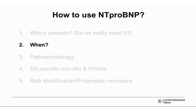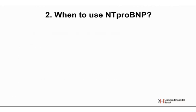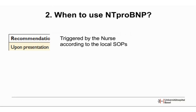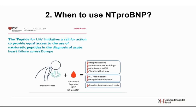Regarding the optimal time point to measure NT-proBNP: the guidelines are clear — if we suspect heart failure, we should measure it on presentation, whether in the emergency department or an ambulatory care clinic. In our emergency department this is even triggered automatically by nurses according to our local standard operating procedures.